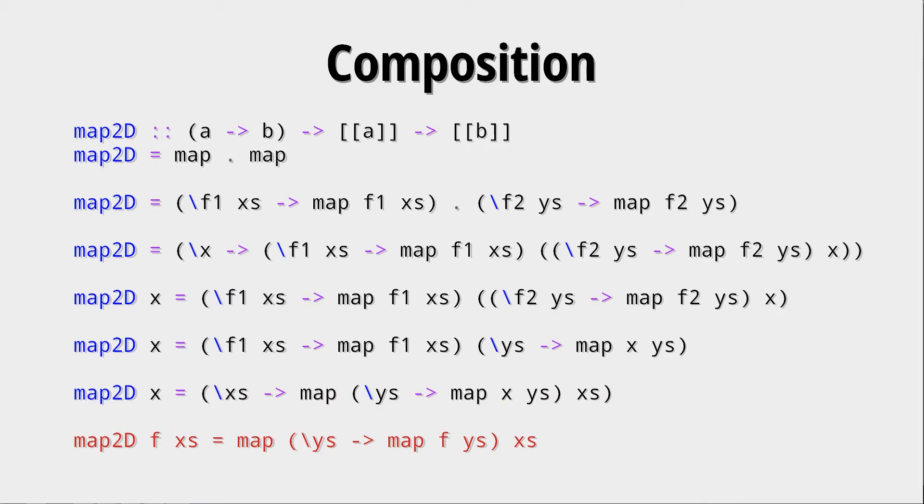Now we rename x to f, because normally if you have a function within your argument list, you would call it f or g or h, you wouldn't call it x. x is sort of a name you only give to elements of a list, for example, or something like that. But here now we have a complete definition of map2d. We had a complete definition before, but now we sort of see why this is a two-dimensional mapping.